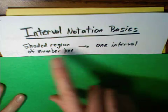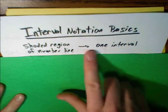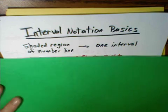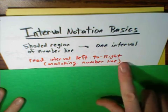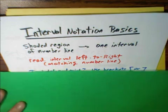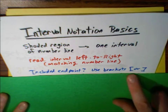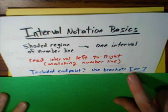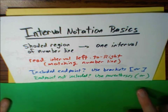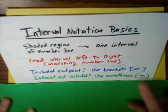Every interval refers to one shaded region on a number line. We read the interval left to right, matching the number line. If we include the end point — meaning there's an equal to symbol — we'll use brackets. Or if the end point is not included, we'll use parentheses.